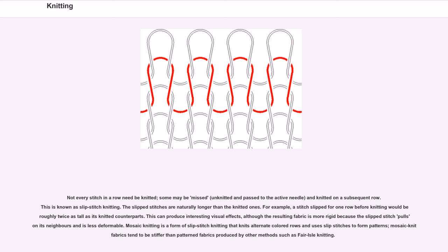The slipped stitches are naturally longer than the knitted ones. For example, a stitch slipped for one row before knitting would bear roughly twice as tall as its knitted counterparts. This can produce interesting visual effects, although the resulting fabric is more rigid because the slipped stitch pulls in its neighbors and is less deformable. Mosaic knitting is a form of slip stitch knitting that knits alternate colored rows and uses slip stitches to form patterns. Mosaic knit fabrics tend to be stiffer than patterned fabrics produced by other methods such as Fair Isle knitting.